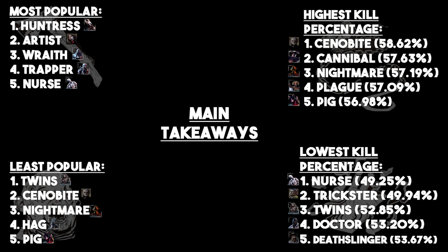I should mention that these numbers are not for red ranks — they're for all players, the entirety of the game. If you went to red ranks, you'd see this list change dramatically. I don't think Pig would be in there, I don't think Nightmare would be in there, and I'd be shocked if Cenobite was in there. At lower ranks, things like reverse bear traps and fake pallets actually start to bother people more.